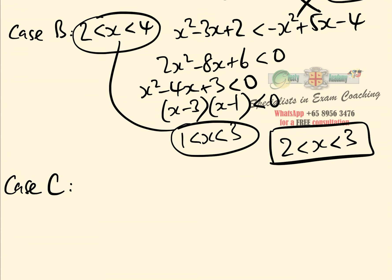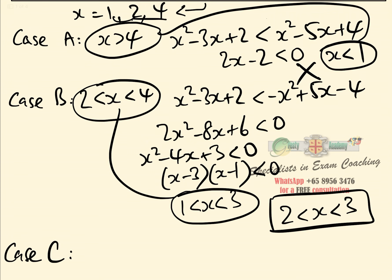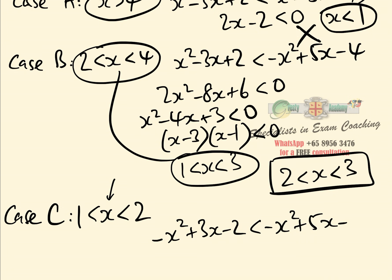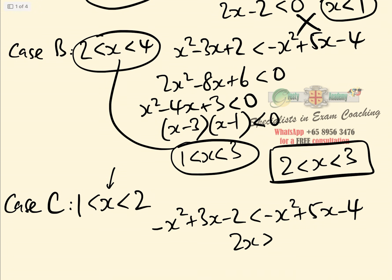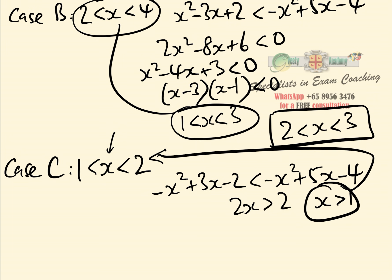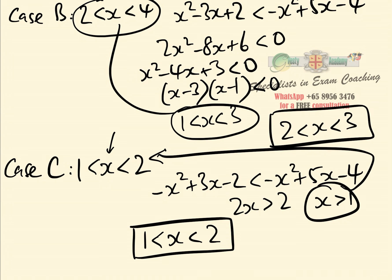Case c: 1 less than x less than 2. Remember, this is the more laborious standard method. Both quadratics are negative in this range, so we have minus x squared plus 3x minus 2 less than minus x squared plus 5x minus 4. Solving that gives 2x greater than 2, i.e. x greater than 1. Comparing to the interval, the entire range 1 less than x less than 2 is part of our solution.